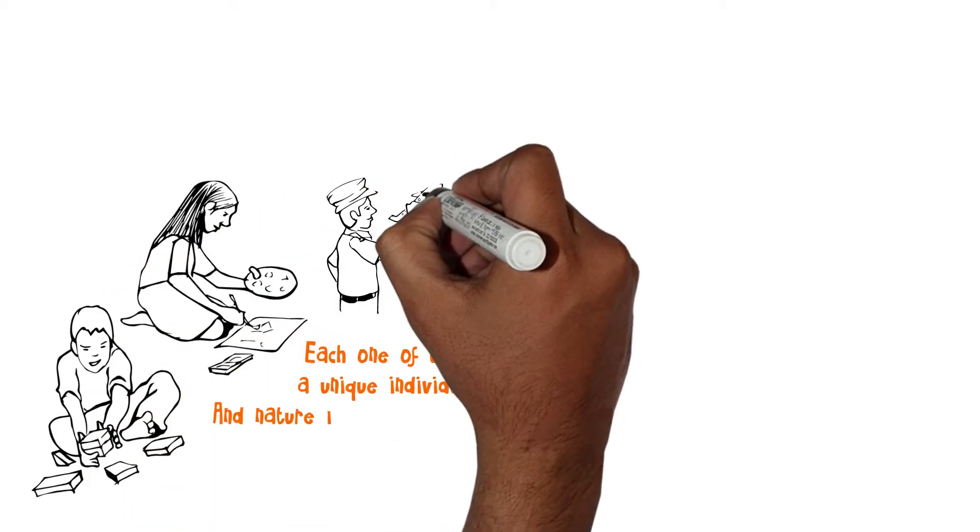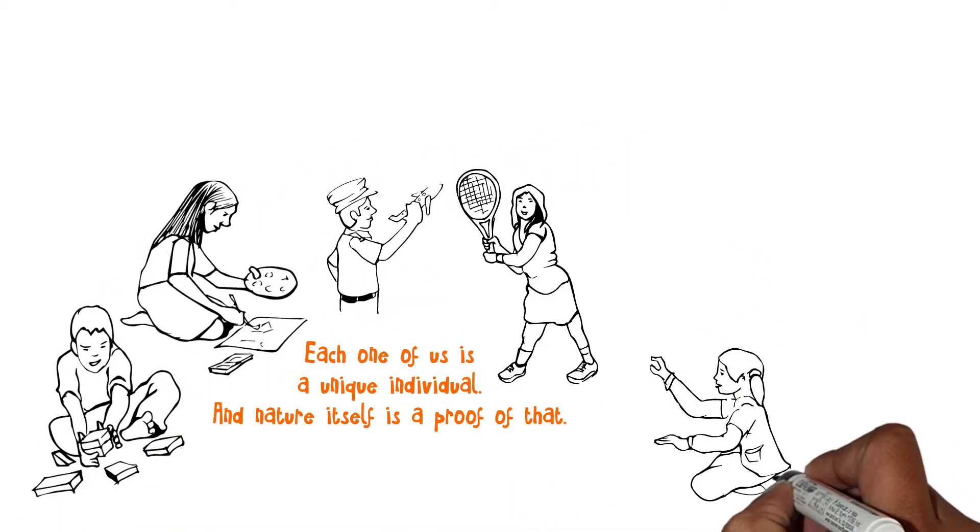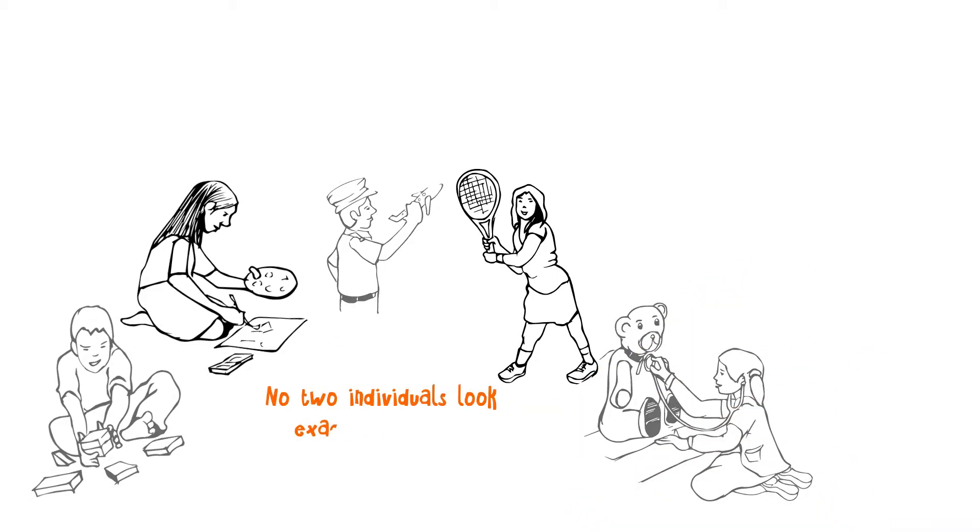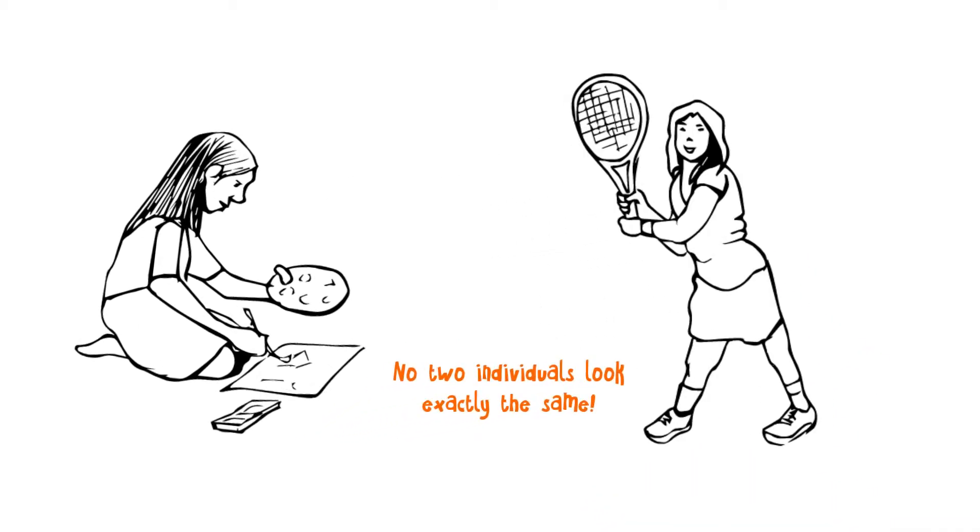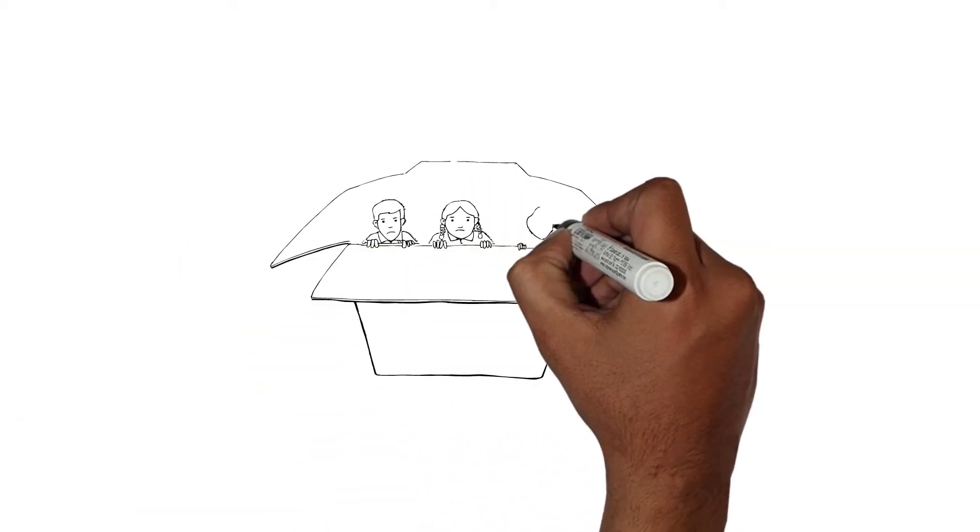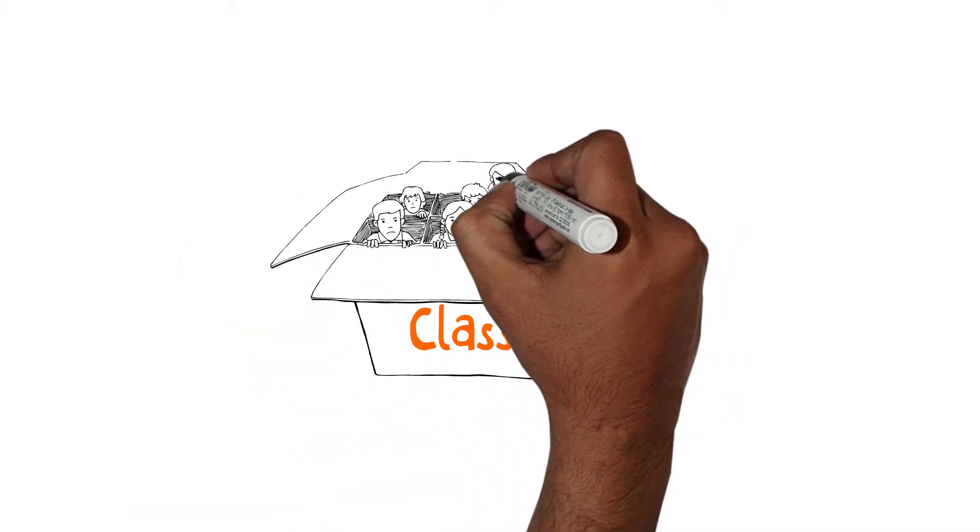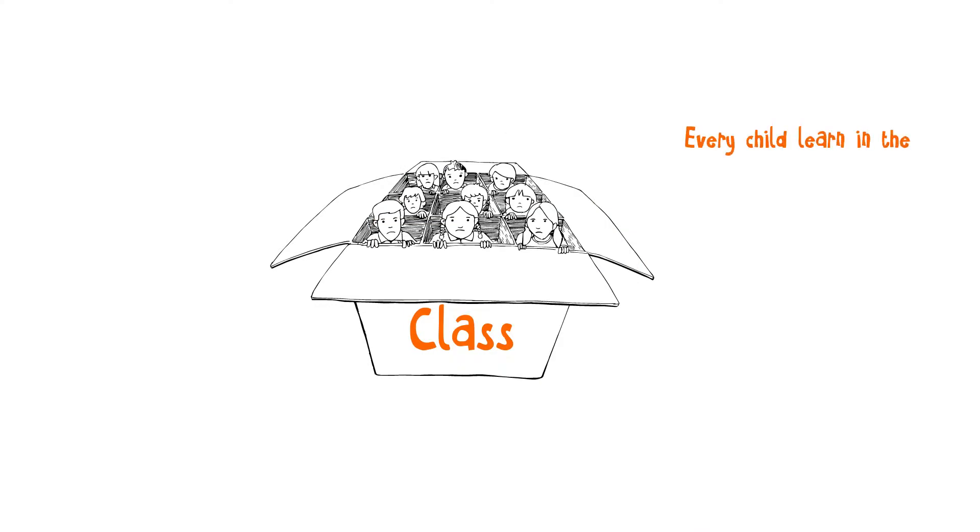Each one of us is a unique individual and nature itself is proof of that. No two individuals look exactly the same. But when it comes to learning, we assume that every child learns in the same way.